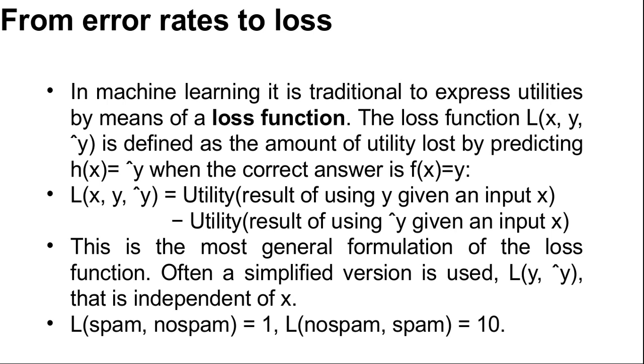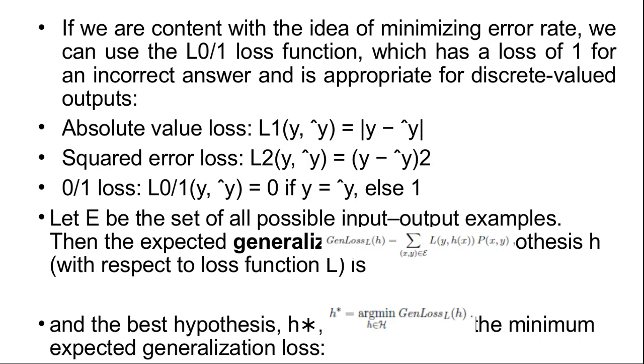If we are content with the idea of minimizing error rate, we can use the L0/1 loss function which has a loss of 1 for an incorrect answer and is appropriate for discrete-valued outputs. Here is absolute value loss: L1(y, ŷ) equals |y - ŷ|, and squared error loss: L2(y, ŷ) equals (y - ŷ)².